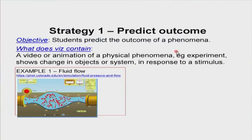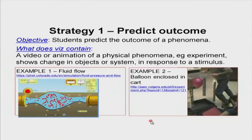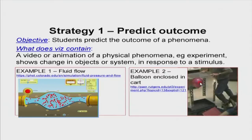Let me show one more example — I will just describe it. In the second example, you can see a man's hands pushing a cart. It is a clear plastic cart with a balloon suspended inside. What the man does in the simulation is push or jerk the cart to the left, and students observe what happens to the balloon: does it stay, does it move to the left, does it move to the right?